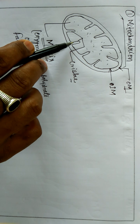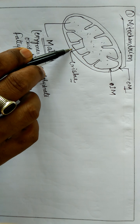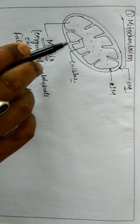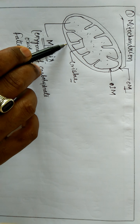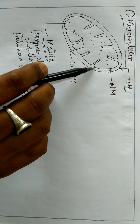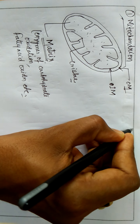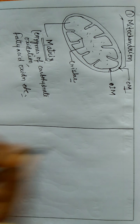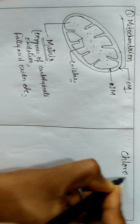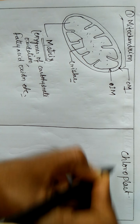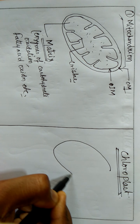This is also a membrane-bound cell organelle, but it is not a part of the endomembrane system because its function is not coordinated with the rest of the cell organelles discussed in part one. That is why we are reading it separately. Simultaneously, we will also read the structure of the chloroplast for a comparative study.